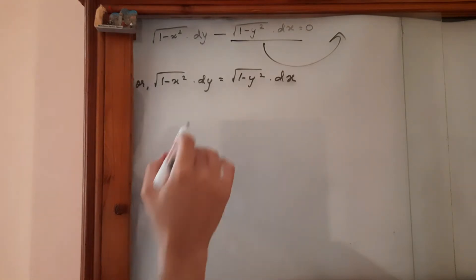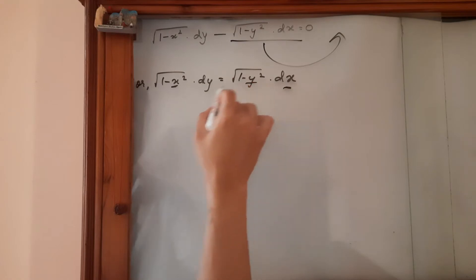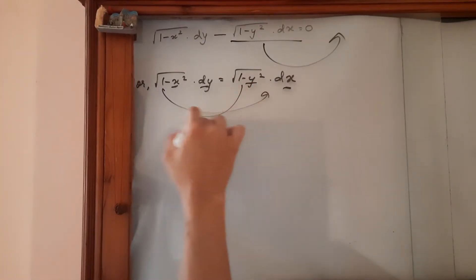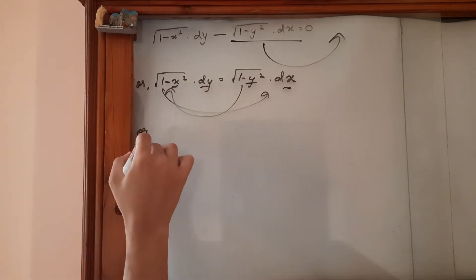So what we try and do is match the term having x with dx and the term with y with dy. So for that, let's send it over here and let's send this over here. So what I'm seeing is, let's do this.